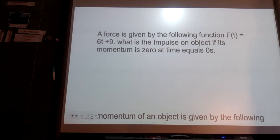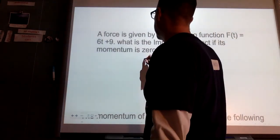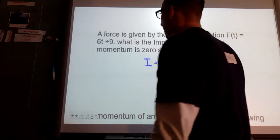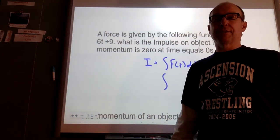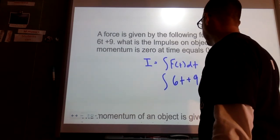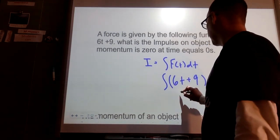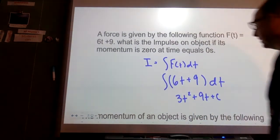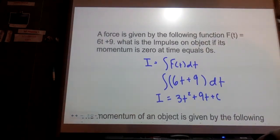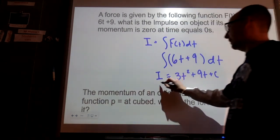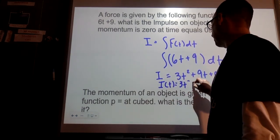All right. A force is given by the following function, F of T equals 6T plus 9. What is the impulse on the object if its momentum is 0 at time T equals 0? So I'm going to say that my impulse is the integral of Ft dt. And there aren't a lot of examples of them asking you to use calculus to solve these problems. So that's why I had to make up my own. So my formula is 6T plus 9 dt. So this is going to be 3t squared plus 9t plus C is going to be equal to our impulse. And then if this is 0 at 0, the C is going to go away. So the function of impulse with respect to time would be 3t squared plus 9t.